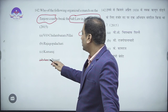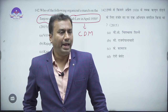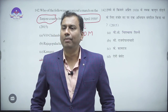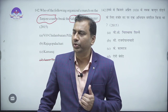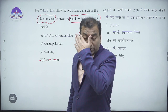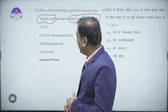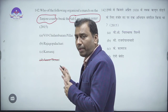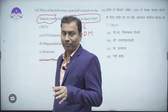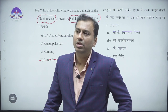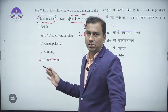Annie Besant can be eliminated because, even though she was a part of the Indian national movement, Annie Besant was most famous and came to the limelight due to the Home Rule League movement. She is associated with the Home Rule League movement, and therefore Annie Besant had no contribution in the Salt Satyagraha leadership — she can be eliminated.